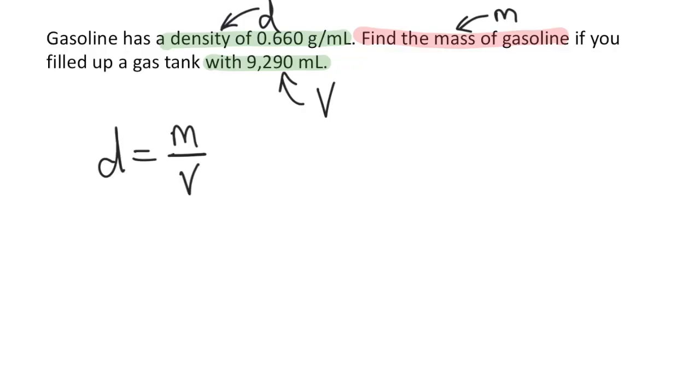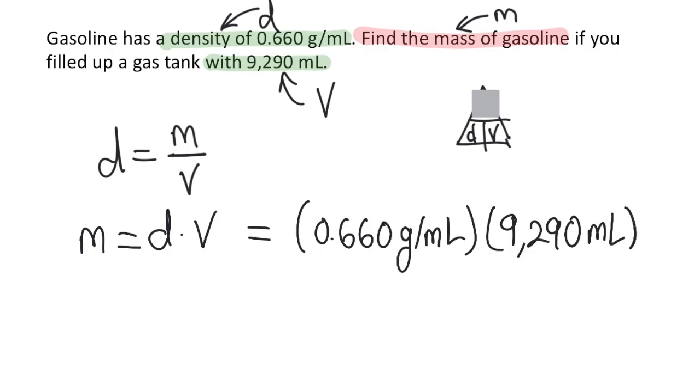I'm going to write down the equation now, d equals m over v. Then I'm going to use my triangle tool to rearrange it and solve for mass. So I'll cover up the m and the tool tells me to multiply d and v together. I've already organized all the given information so I could just plug it into the equation like this.